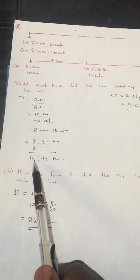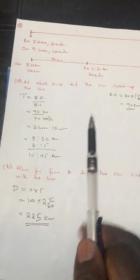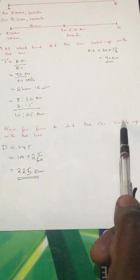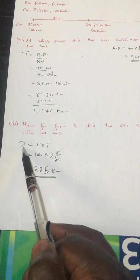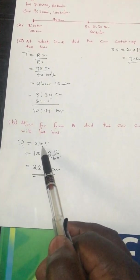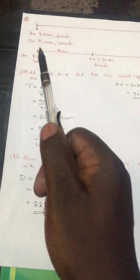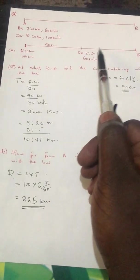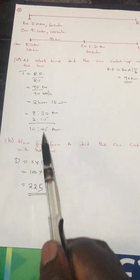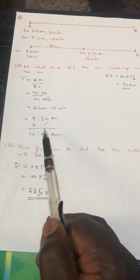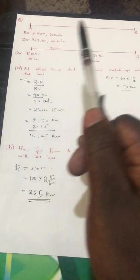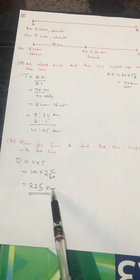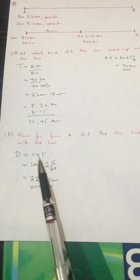The whole calculation began at 8:30 a.m., so the exact time is 10:45 a.m. Next question: how far from A did the car catch up with the bus? Distance equals speed times time. The car's speed is 100 km/h and it took 2 hours 15 minutes to catch up, so 100 times 2.25 equals 225 km from A.